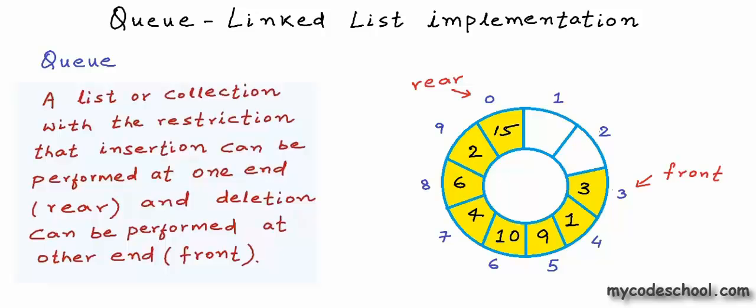With array implementation there is a limitation: the array will always have a fixed size, and once all positions in the array are taken and the array is exhausted, we have two options. We can either deny insertion — say the queue is full — or we can create a new larger array and copy elements from the previous array to the new larger array, which will be a costly process. We can avoid this problem if we use a linked list to implement a queue.